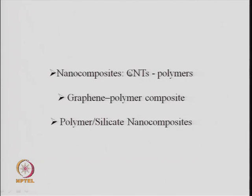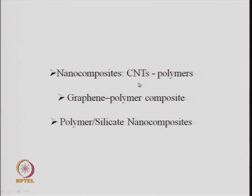When you mix carbon nanotubes with different types of polymers, you can get different properties. If this is a semiconducting nanotube, you will have semiconducting property incorporated into the nanocomposite, while the polymer provides strength or ductility for applications. Combinations of carbon nanotubes — either semiconducting or metallic — with polymers are known and they have different properties.